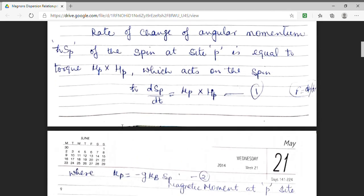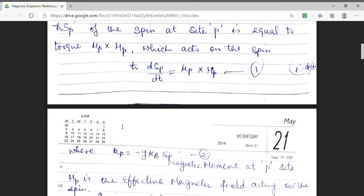Here, mu p is the magnetic moment and it is equal to minus g mu b sp. g is the Linde g factor, mu b boher magneton and sp denotes the spin at the p site. And what is hp? hp is the magnetic field which acts on a spin.